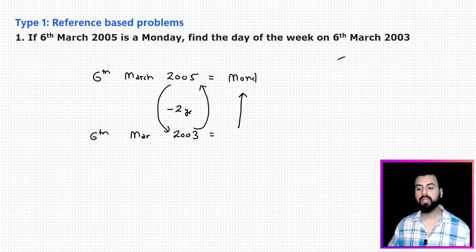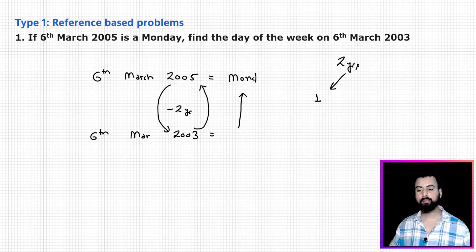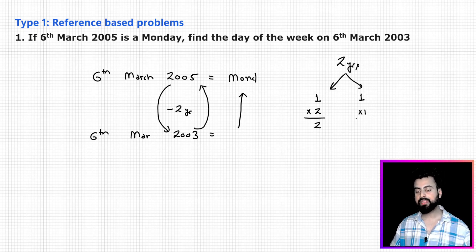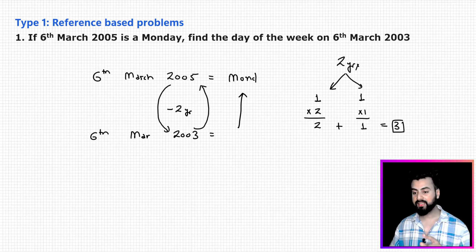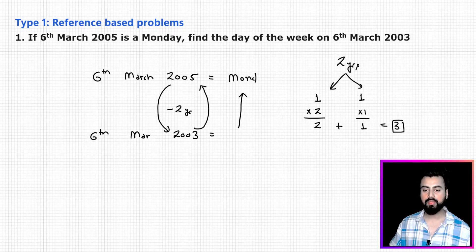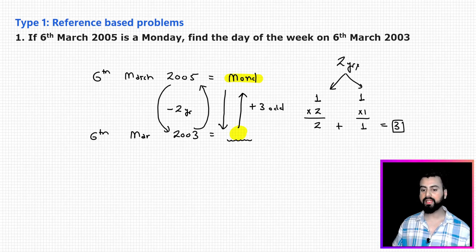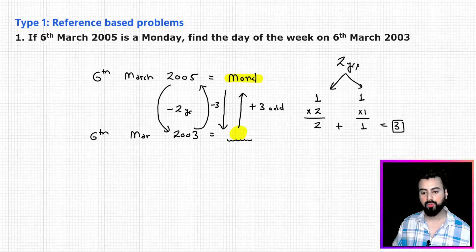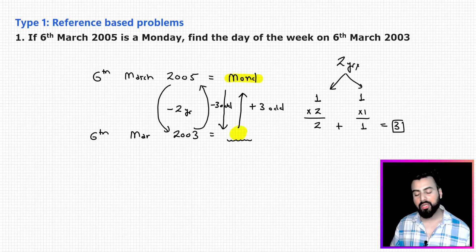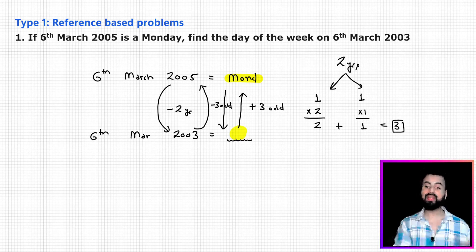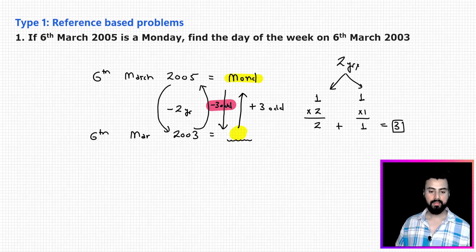Going from 2003 to 2005 is two years. Out of these two years, one is a leap year — 2004. So there is one leap year and one ordinary year. A leap year has two odd days, an ordinary year has one, giving three total odd days. Since I'm going from 2005 back to 2003, I reverse the sign — minus three odd days means going back by three days.